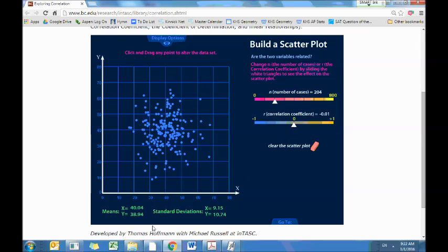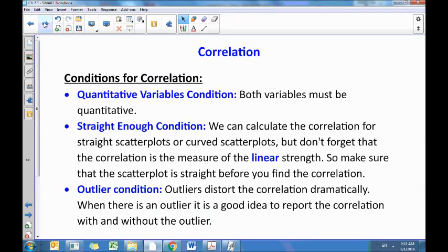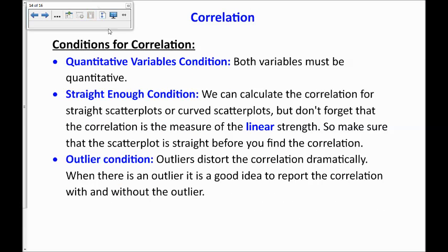So, before you can find the correlation, you do need to check some conditions, as we do in this class, we check conditions before we do any kind of process. The first is the quantitative variable condition. Both variables must be quantitative for you to look at a correlation. The second thing is the straight enough condition. We can calculate the correlation for straight scatter plots or curved scatter plots, but don't forget that the correlation is the measure of the linear strength. So, if it's curved, you can still calculate the correlation, but it may not be as meaningful to you because it's curved. So, make sure that the scatter plot is straight before you find the correlation.